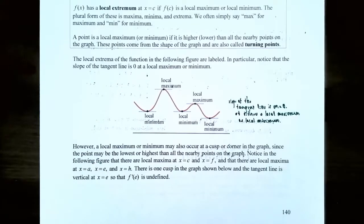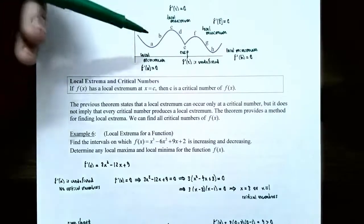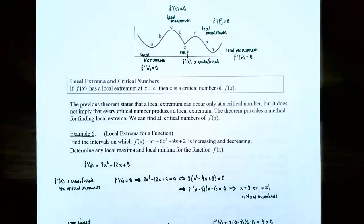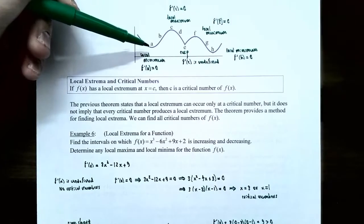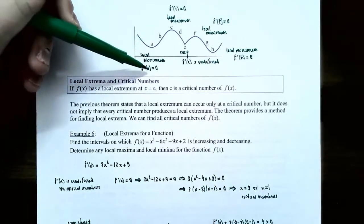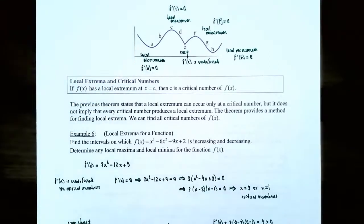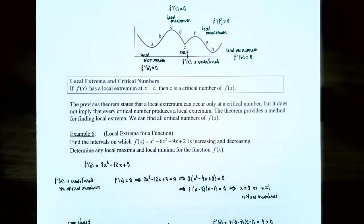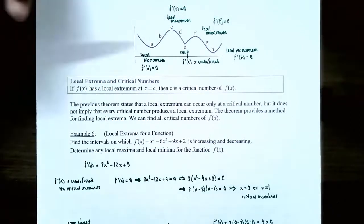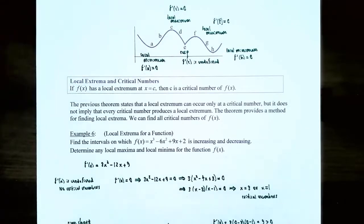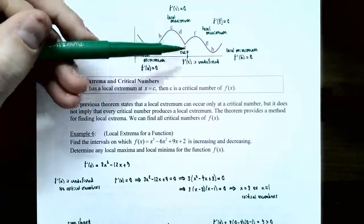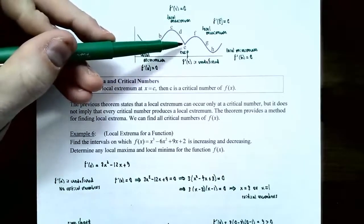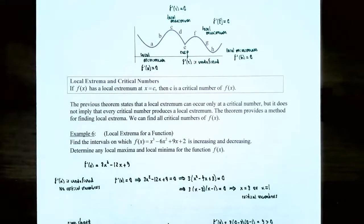There's a local minimum at x = a because it's the lowest point in its neighborhood — all other y values are above it, and the slope of the tangent line is zero, so f'(a) = 0. A local maximum occurs at x = c because all y values are below the y value at x = c, so f'(c) = 0. At x = e you have a cusp, so the derivative does not exist — f'(e) is undefined. But it is a local minimum because all y values close to it are above the y value at x = e.